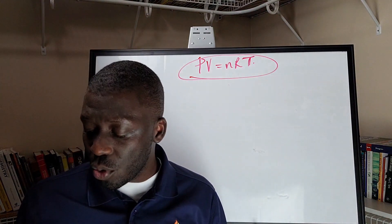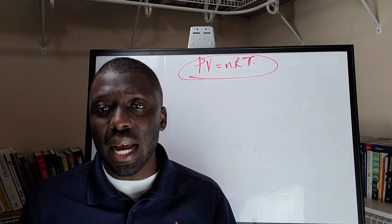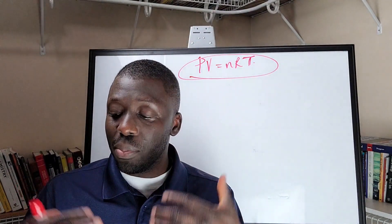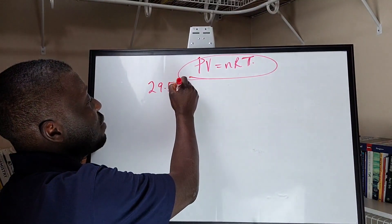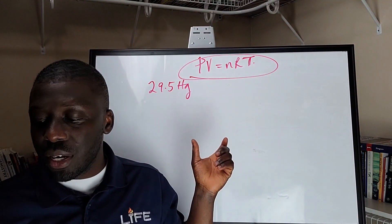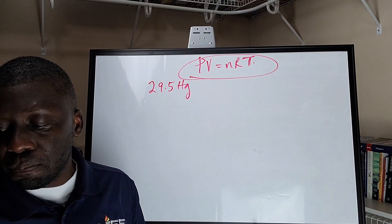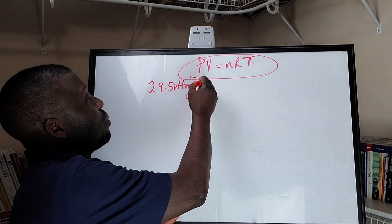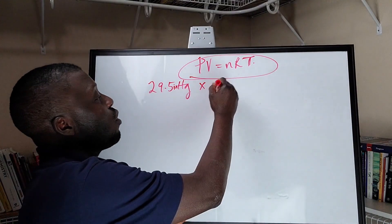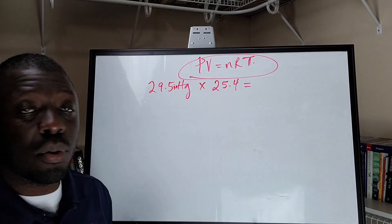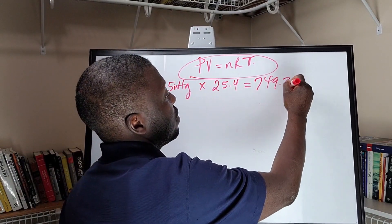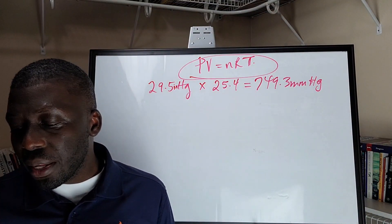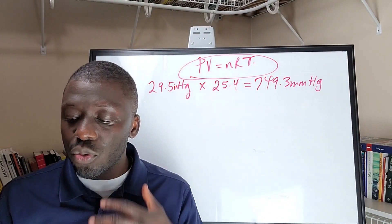So basically, the first thing — I have some notes here — we had the pressure, and we converted that to millimeter mercury. So let's say we start with 29.5 inches mercury, and then we multiply that by 25.4, so that gives us 749.3 millimeter mercury. So we have the value for the pressure we'll be using in this problem, and then we can convert that to atmosphere using a cross multiplication.